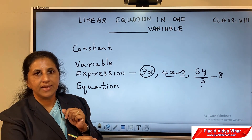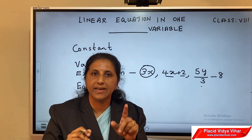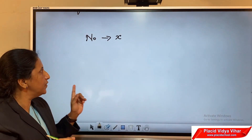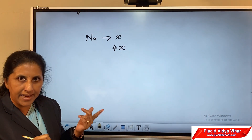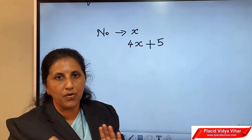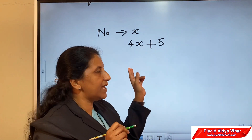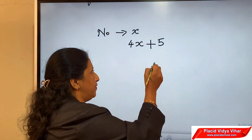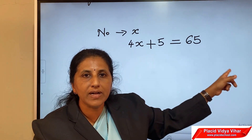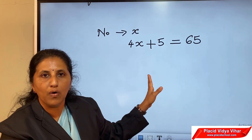Once more, move back to our puzzle. In that puzzle, Anu asked Manu to think a number — the number is unknown, so we take it as the variable. Let the number be x. Then she said multiply the number by 4, so the next step is 4x. Then add 5 to the number, giving the expression 4x plus 5. This is what Manu got. The answer was 65, so we can write 4x plus 5 equals 65. This is the equation formed for the puzzle. Solving this equation, we can find the variable — that is the unknown number Manu was thinking.